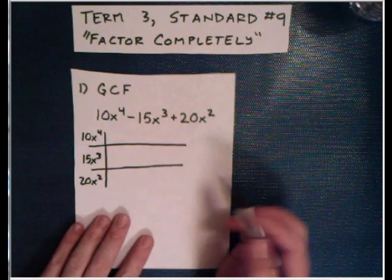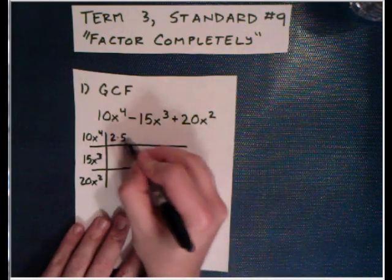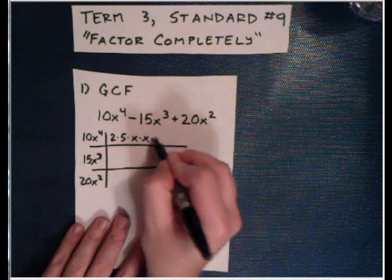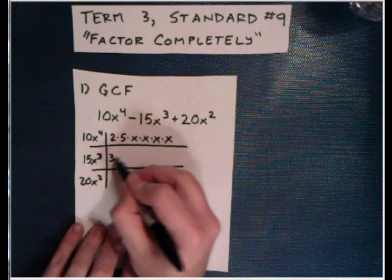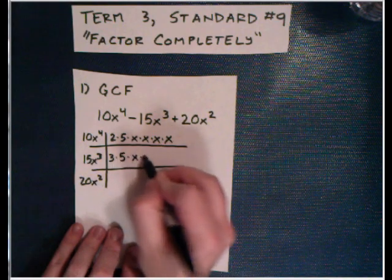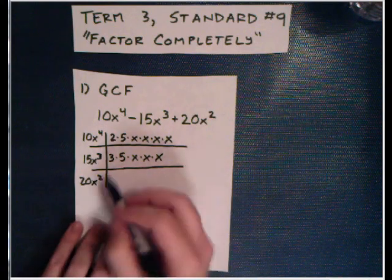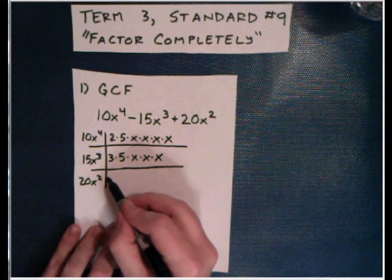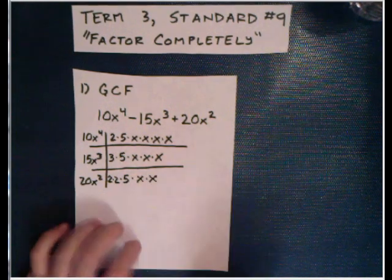We're going to try and figure out what each of them has in common. In the table, we're going to prime factor everything. For example, 10x⁴ would be 2 times 5 times x, x, x, x. For 15x³, that would be 3 times 5, x, x, x. We're just breaking it all apart. And then 20x² would be 4 times 5 or 2 times 2 times 5 times x times x.